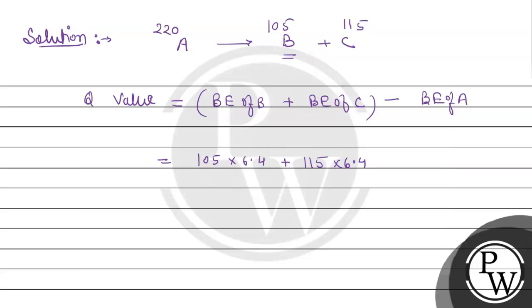Total binding energy is calculated, then minus binding energy of A. Mass number 220 and its binding energy is 5.6 per nucleon. Solving, you get Q value equals 176 mega electron volt.